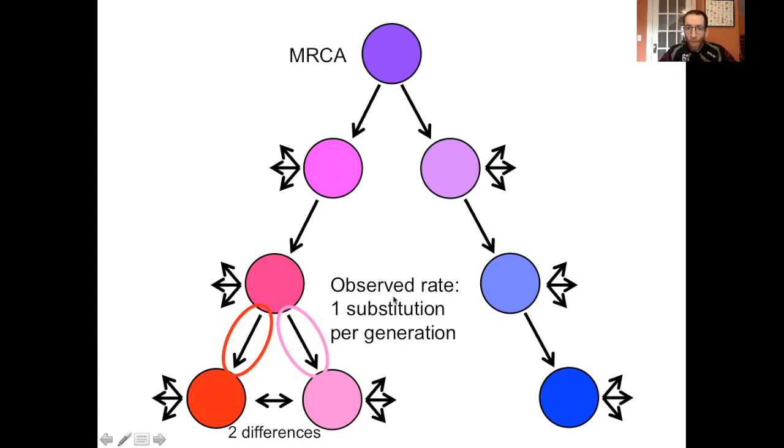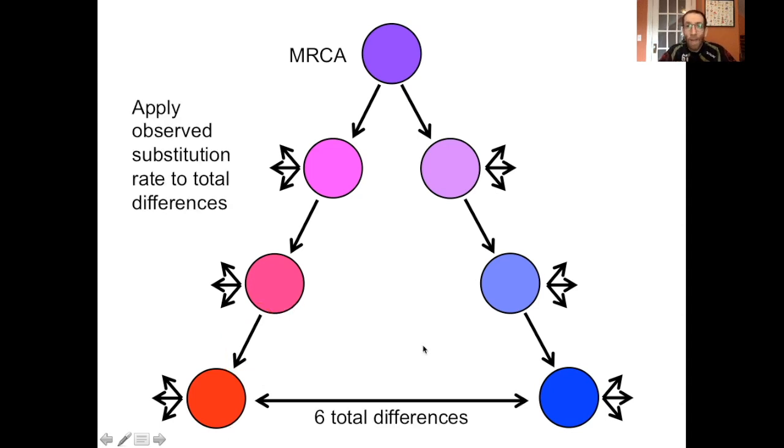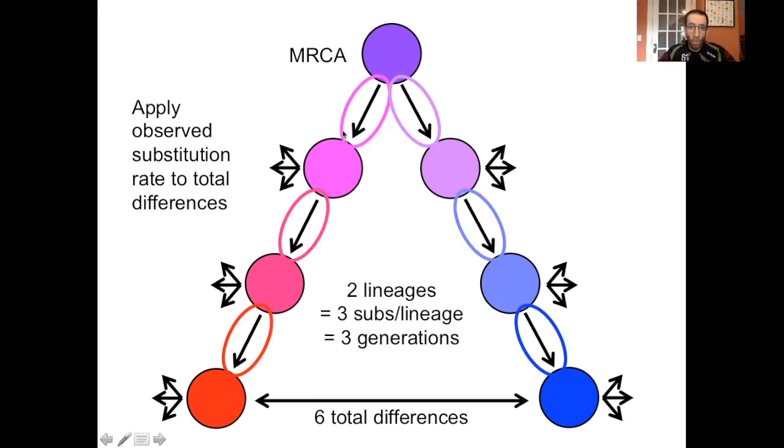Now we have a substitution rate, one substitution per generation. Well, now we can apply that observed, directly measured substitution rate across the total differences for our population of interest. Since we have two lineages, we have one lineage down to red, one lineage down to blue, and we have six total differences. That means we have three substitutions per lineage. And since we've measured directly one substitution per generation, that means we have three generations from our current population back to their most recent common ancestor.